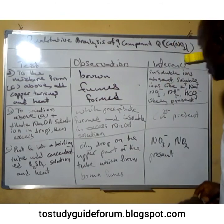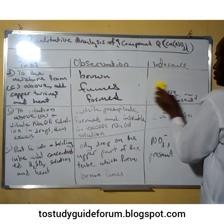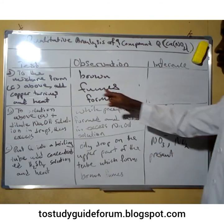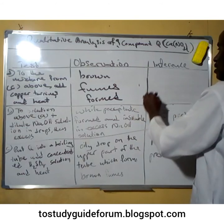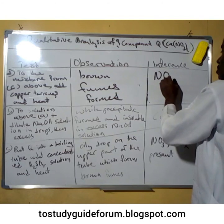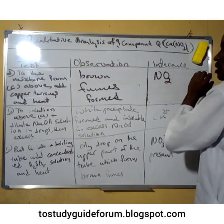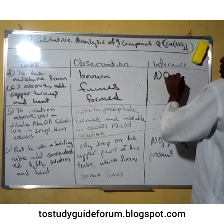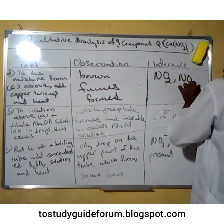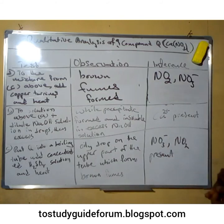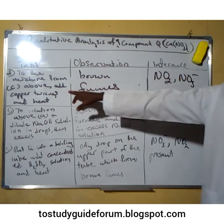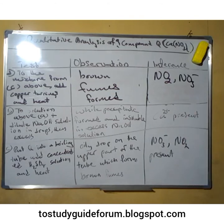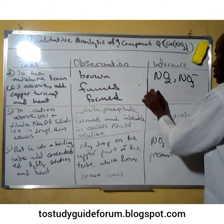In our observation, brown fumes are formed. This means that since we have the brown fume — which is now more pronounced — the brown fume is evidence that we have nitrogen dioxide (NO₂) gas. This means the compound contains nitrate; nitrogen dioxide gas is being released, and the ion present is confirmed as trioxonitrate(V).